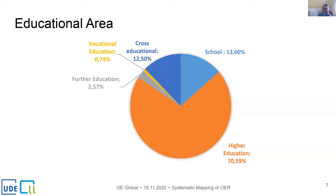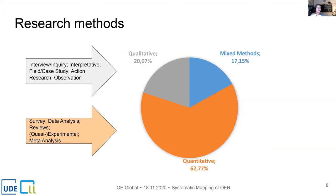Regarding research methods used in the empirical studies, quantitative methods are at the highest level with just under 63 percent, while qualitative methods account for a relatively small share of 20 percent — at a similar level to mixed method approaches with a share of about 17 percent. Looking deeper at the methods, the quantitative area consists mainly of surveys and data analysis, while interviews and interpretative studies predominate in the qualitative studies.